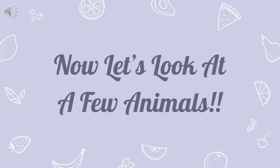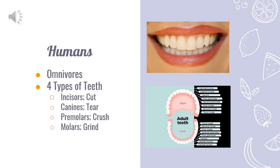Now let's look at a few animals. First, let's take a look at human teeth. Humans are omnivores, meaning they eat both plants and animals. When looking at the inside of a human mouth, we can see that they have four different types of teeth that each have their own function when eating. The incisors at the front of the mouth are used to cut food. Following the incisors are the canines, whose job is to tear up the food. After the canines are the premolars, which crush the food. And lastly, located in the back of the mouth are the molars that grind up the food into tiny pieces, so we can swallow our food easier.